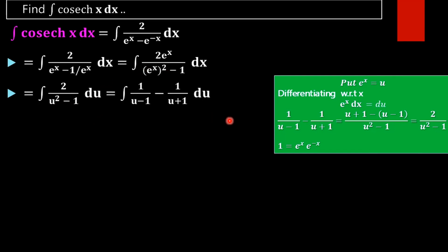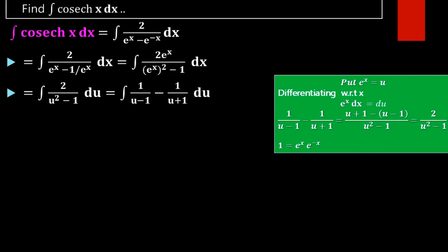We can rewrite 2 divided by (u squared minus 1) using partial fractions as 1/(u minus 1) minus 1/(u plus 1). By simplifying or applying the partial fraction method, we confirm that 2/(u² − 1) equals 1/(u − 1) minus 1/(u + 1).